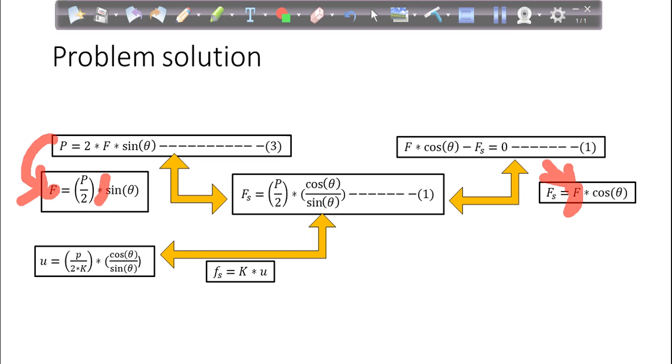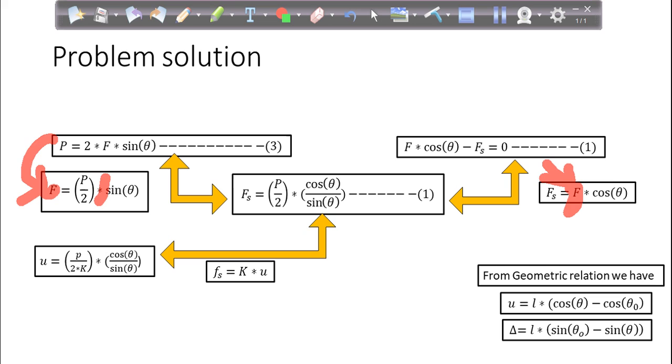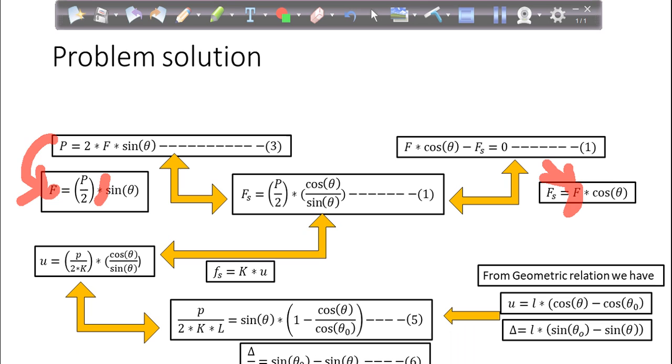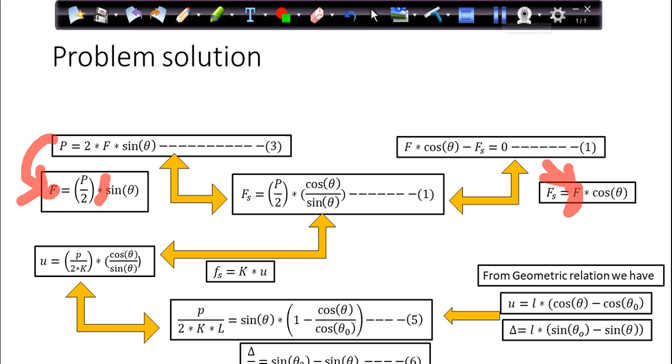But from the trigonometry what you have derived, U is L cos theta naught minus cos theta. Similarly, delta equals L sin theta naught minus L sin theta. So simply using these geometrical relations, what you have finally got is these equations. Using all the equations and simply by substituting the values and using one equation into another, we ended up with these two equations.